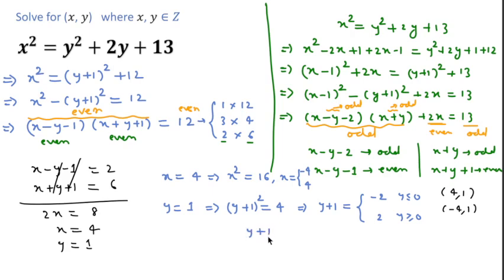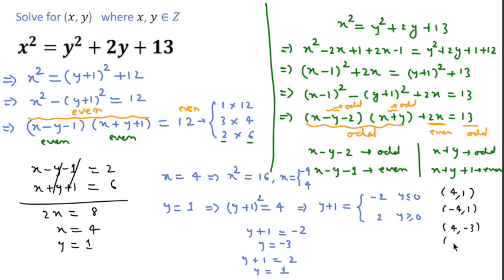If y plus 1 equals minus 2, then y equals minus 3. If y plus 1 equals 2, then y equals 1. So we can also form the pairs (4, minus 3) and (minus 4, minus 3). These four pairs — (4, 1), (minus 4, 1), (4, minus 3), (minus 4, minus 3) — are all possible pairs for this equation.